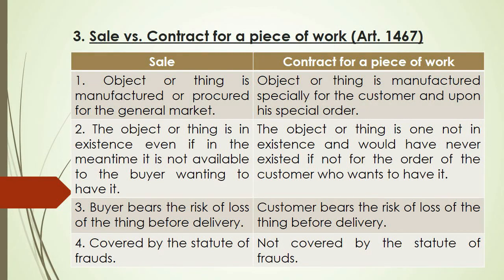Now, what about sale and contract for a piece of work? How are these two different from each other? First: in sale, the object or thing is manufactured or procured for the general market — that thing is for sale to the public at large. But in the contract for a piece of work, the object or thing is manufactured not for the general market, not for the public at large, but for the special purpose or needs of the customer.